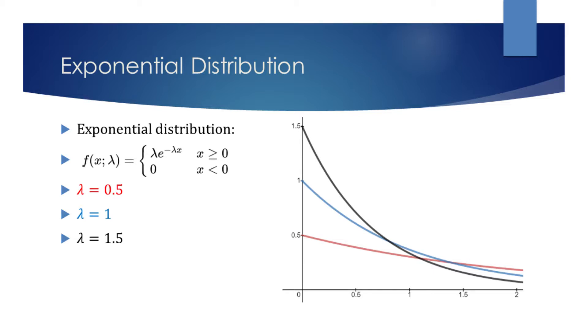We can also see that this function is parametrized by lambda. If we compare the red graph with lambda 0.5 to the black graph with lambda 1.5, we will observe that higher the lambda, sharper the peak.